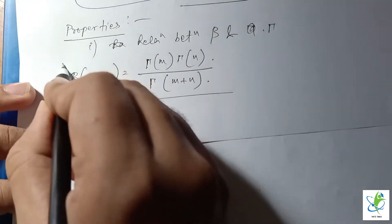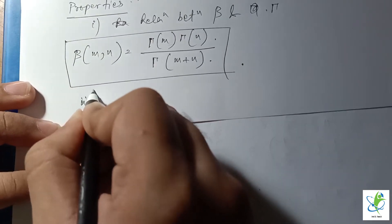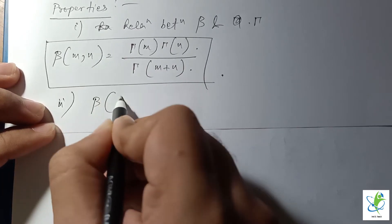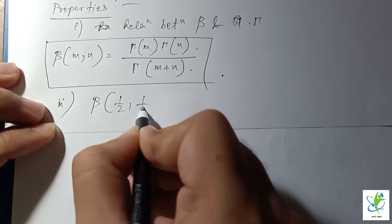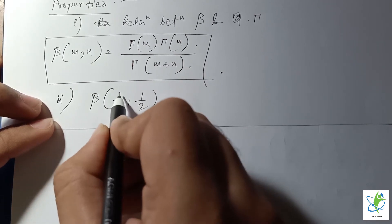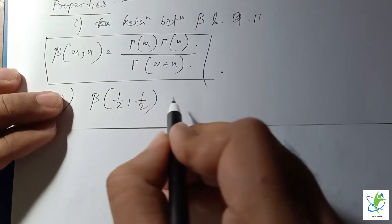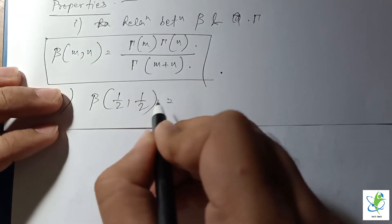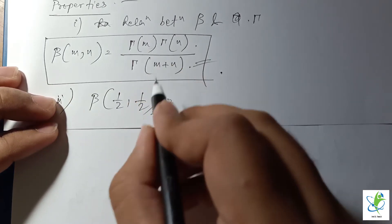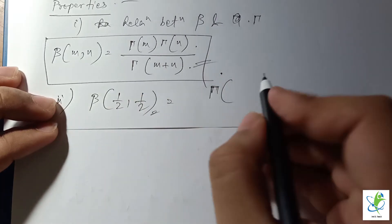The second property states that β(1/2, 1/2) can be evaluated. Here m = 1/2 and n = 1/2. Substituting into the relation, we get Γ(1/2) · Γ(1/2) / Γ(1/2 + 1/2), which gives Γ(1/2) · Γ(1/2) / Γ(1).